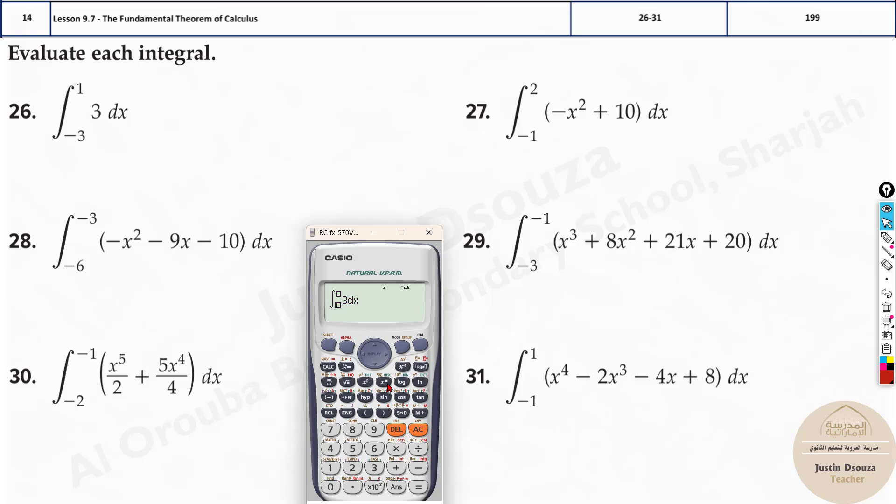All you need to do is type it out as it is. Integral 3 from minus 3 to 1. What happens? The answer is 12.